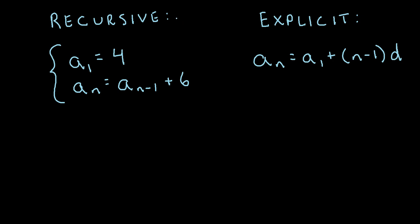The key to writing a recursive formula as an explicit formula is to recognize that whatever this term is, when we have aₙ equals aₙ₋₁, what we're adding or subtracting, this is d, the common difference between the terms. That's what you can plug into this formula.